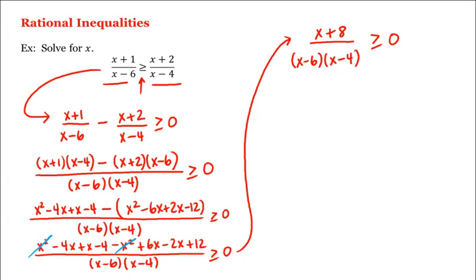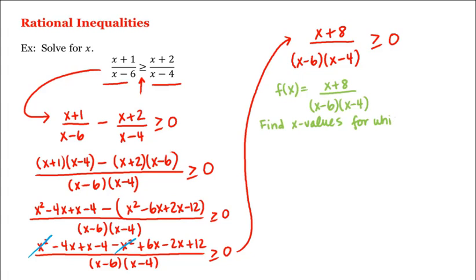Now let's let f of x equal the left hand side. So we want to find x values for which f of x is greater than or equal to 0. And isn't f a rational function? So we'll use the fact that a rational function without any common factors in its numerator or denominator can only change signs at the zeros of its numerator or the zeros of its denominator — that is, at its x-intercepts or on either side of its vertical asymptotes.